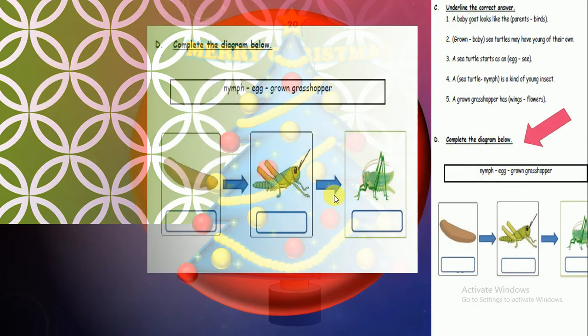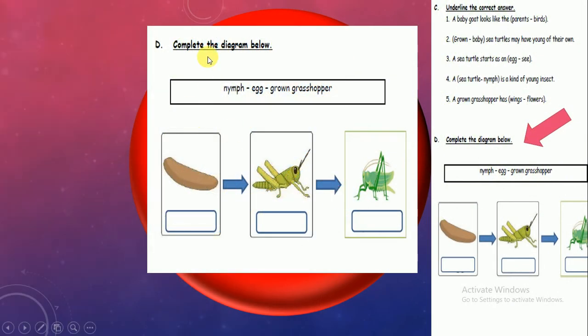Number 13, it's a nice question. We're gonna complete the diagram below by taking words from this box and put it in the right place. We have nymph, egg, growing grasshopper. Number 1: Do you think this is nymph or egg or growing grasshopper? Egg. Excellent! Picture number 2 after egg hatch will be nymph or growing grasshopper? Nymph. Why? Because it's without any wings. Here it have big wings and strong back legs, so this is growing grasshopper. Excellent!